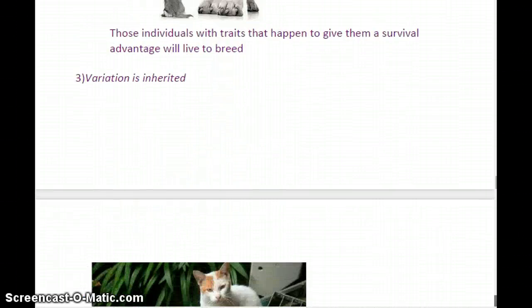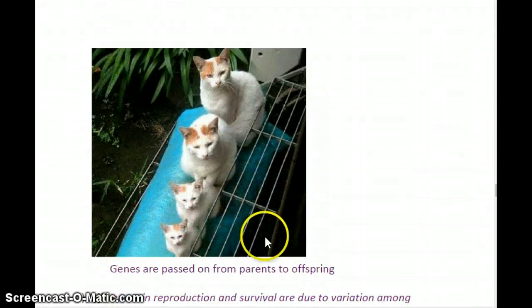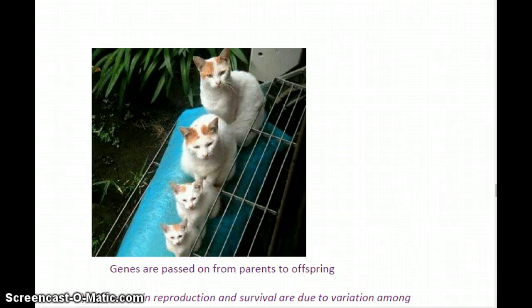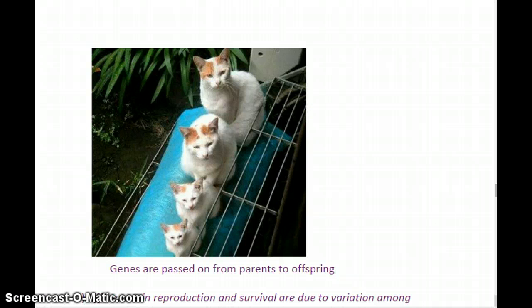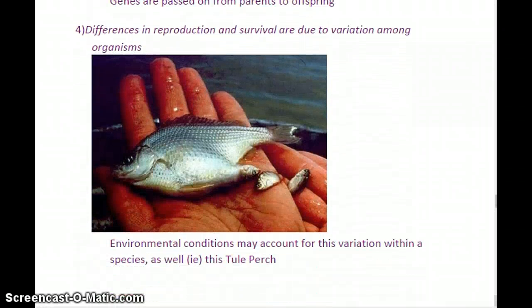And then finally, the third condition is that variation must be inherited. None of this would work if we didn't have inheritance. Here's a little lineage of cats — you can tell they're related because they possess the same color characteristics. You look like your parents or your grandparents or other members of your extended family because genes are inherited. And differences in reproduction and survival are due to variation among organisms, so there are differences in how well different species can reproduce and survive.